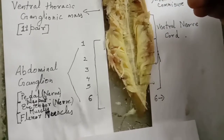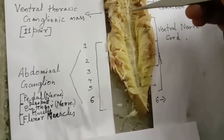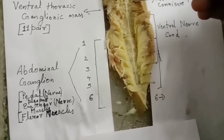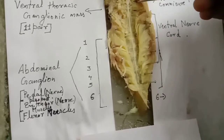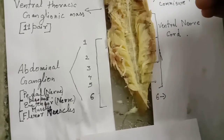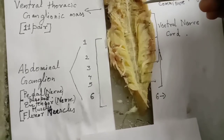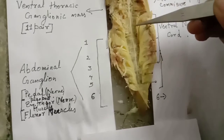The following nerves originate from the ventral ganglionic mass: mandibular nerve, maxillary nerve, nerve to the first, second, and third maxillipeds, and nerve to the first, second, third, fourth, and fifth pair of walking legs.